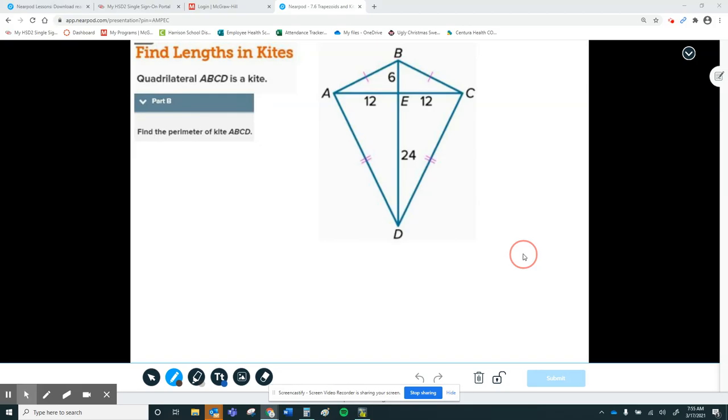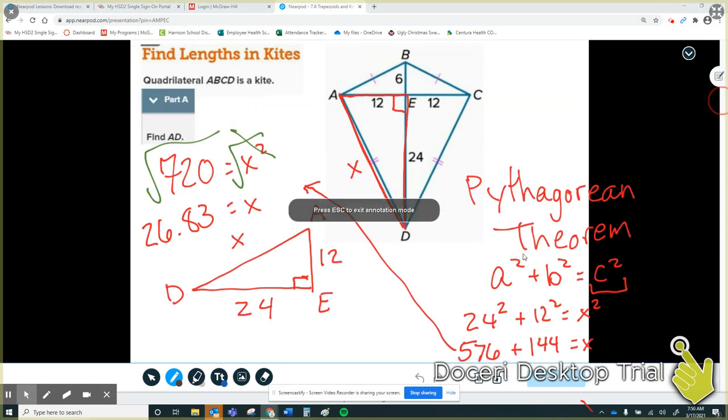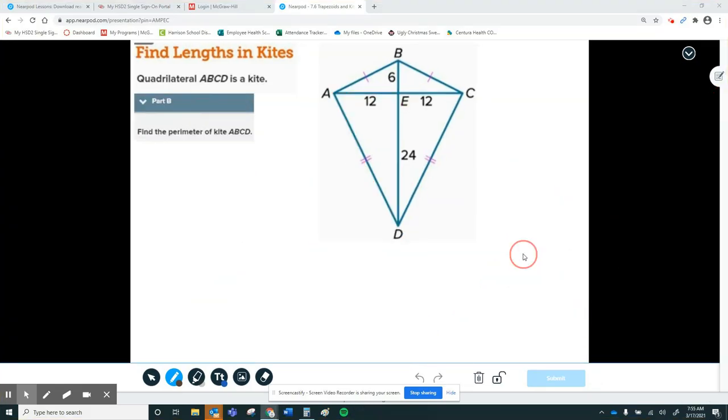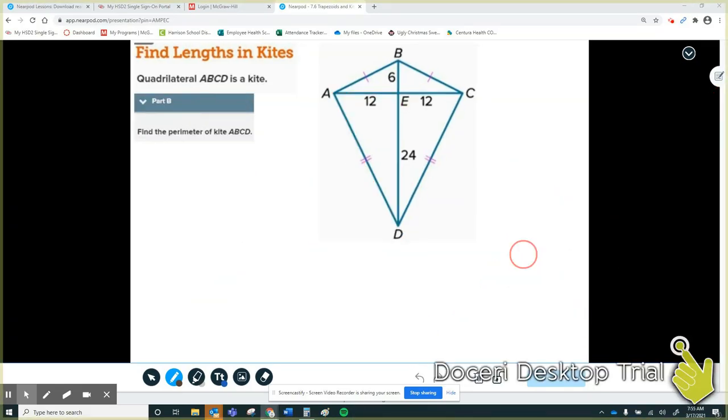So speaking of, here is an example of calculating perimeter. We figured out in the last problem that these bottom two sides, since they are congruent, are 26.83. Now what we have to do is figure out what these two sides are so that we can add them all together and calculate the perimeter.